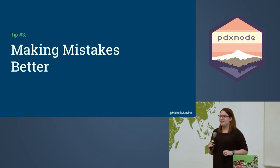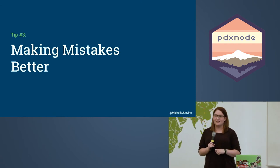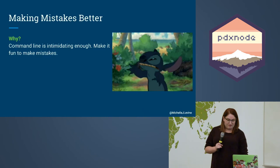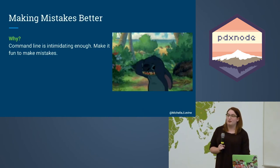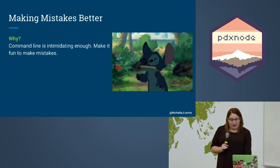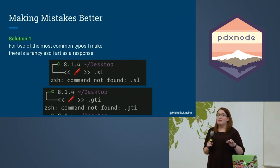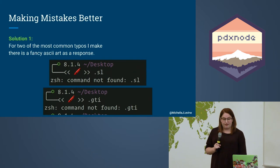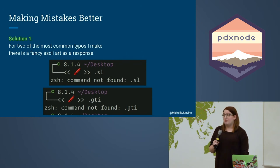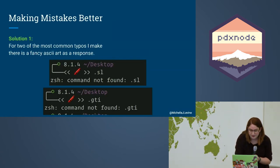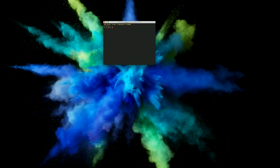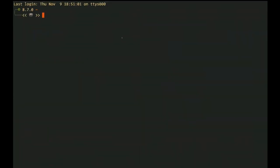The last thing I did to make my command line experience better was figure out how to make mistakes not as annoying. It's already intimidating enough. I came up with a couple of things. The first one is I'm always typing ls — and there's a cool program called sl. And the same for git when I type it incorrectly — there's a program called gti that you can install. So now if I type sl, instead of getting a command not found, I get a train.